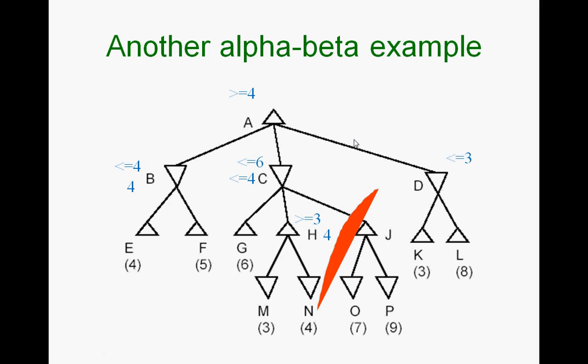D to K, and K is 3, so D is less than or equal to 3. Now because D is less than or equal to 3 and A is greater than or equal to 4, again you have a cutoff. This guy will never let anything better than 3 up, and this guy won't need anything worse than or equal to 4. So at this point, under D you just stop.